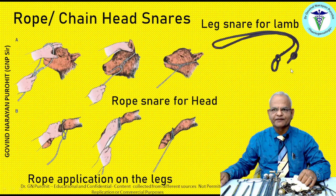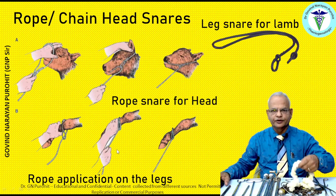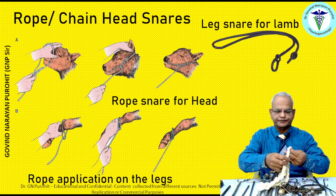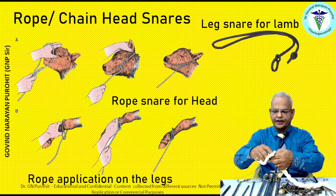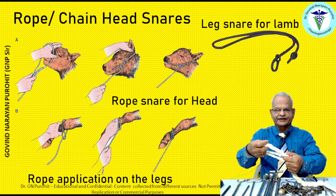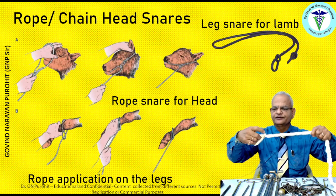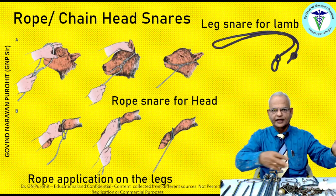Leg snares are available for pulling the lambs. They are made of rope. You make a loop, put it on the leg of the fetus, tighten one end, and then pull the leg of the fetus.